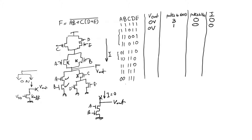The input 1,1,0,0,1 is no different from the case before, because transistors A and B are on and transistors C and D are cut off in the pull-down network. It doesn't matter if D is cut off or on as long as C is cut off. So the output is zero volts, paths to ground is one, paths to supply is zero, and current flowing is zero. Similarly, for input 1,1,0,1,0, transistor E is now cut off instead of transistor D, but again it doesn't change the result: paths to ground is one, paths to VDD is zero, current is zero, output is zero volts.